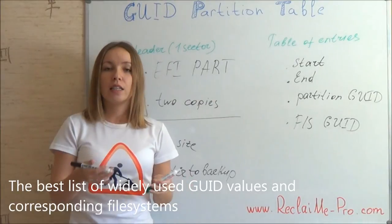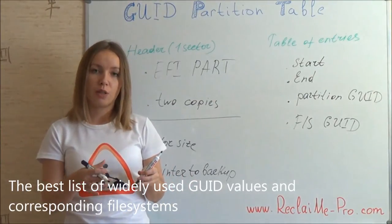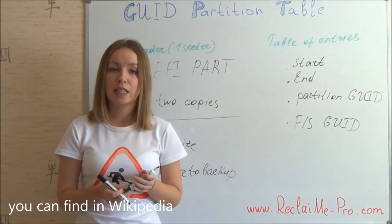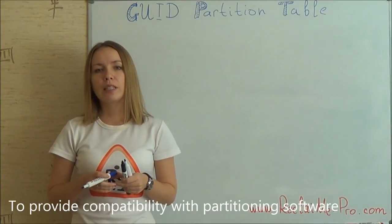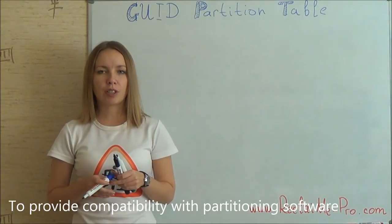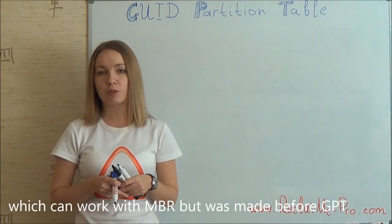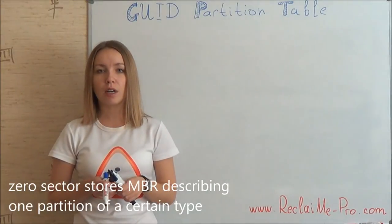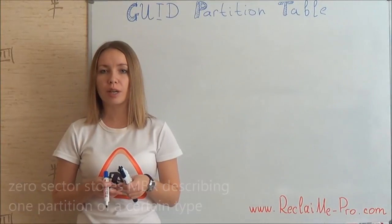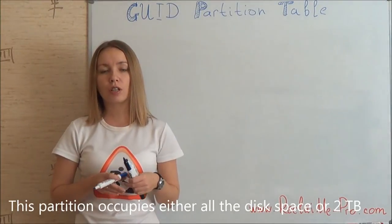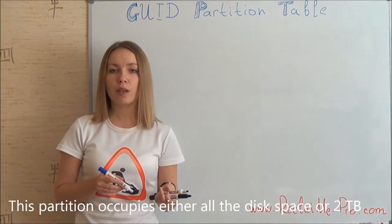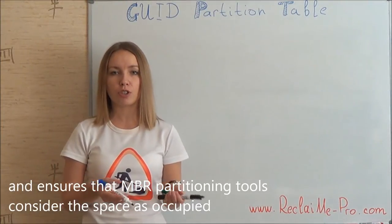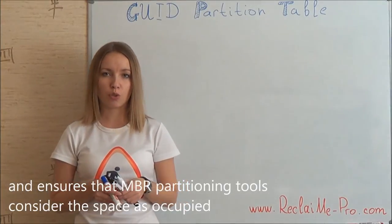The best list of widely used GUID values and corresponding file systems can be found on Wikipedia. To provide compatibility with partitioning software that can work with MBR but was made before GPT, sector zero stores a protective MBR describing one partition of a certain type. This partition occupies either all the disk space or 2TB, and ensures that MBR partitioning tools consider the space as occupied.